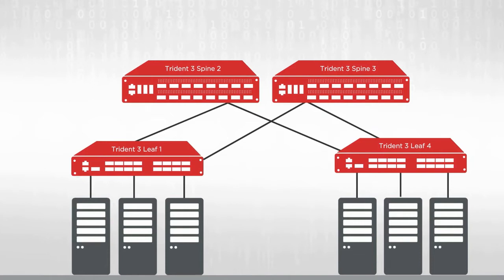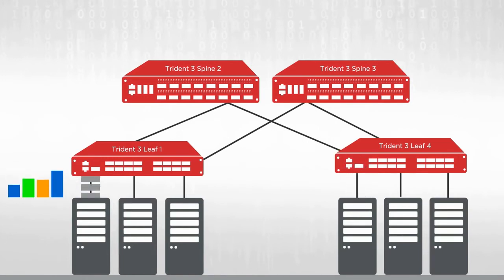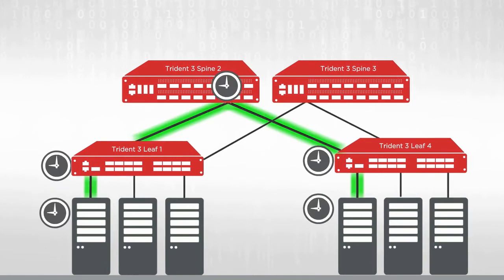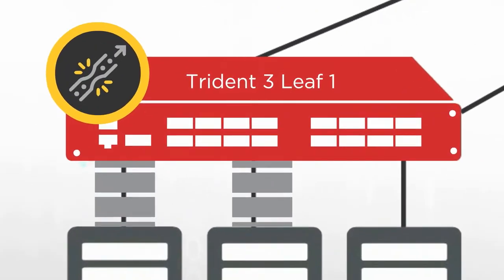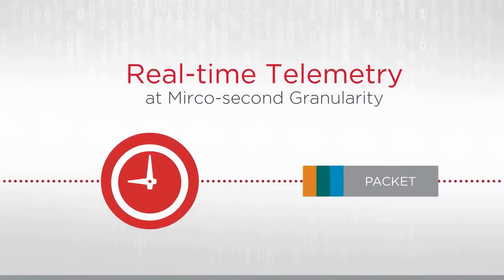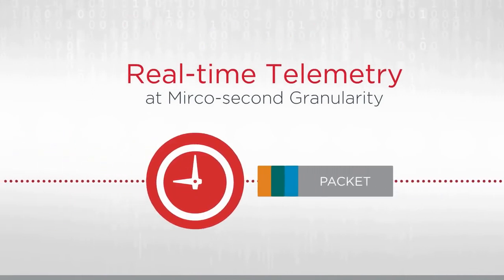Using in-band telemetry, it becomes easier to analyze when a packet enters and exits the network, at what rate packets arrive at a particular hop, what path the packet takes, how long the packet spends at each hop, and which switches experience congestion. Gathering such details at packet level enables real-time telemetry with microsecond granularity.